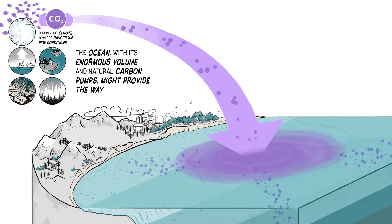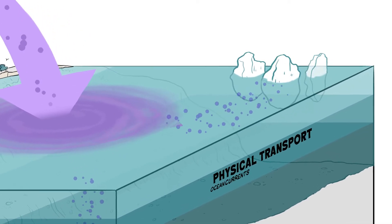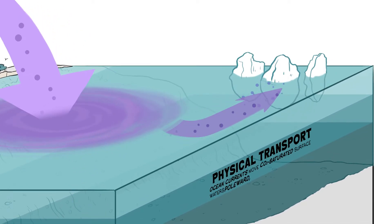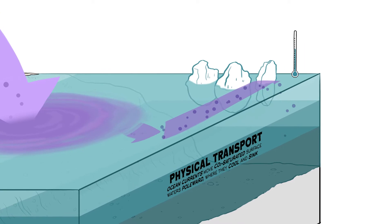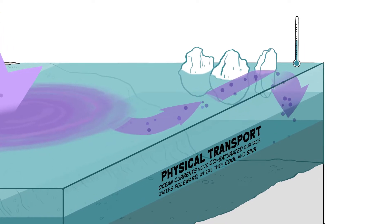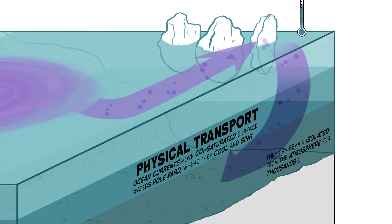Ocean currents move CO2-saturated surface waters poleward, where they cool and sink, pulling our emissions into the deep ocean, where they can remain isolated for thousands of years.